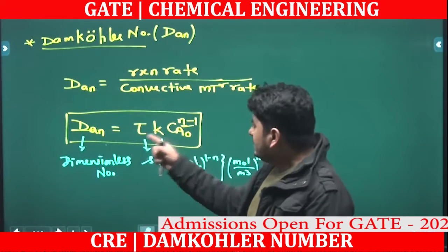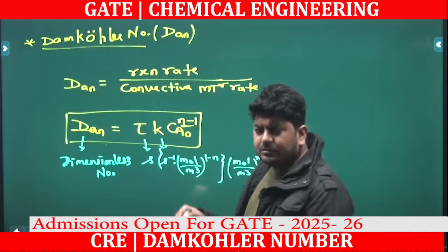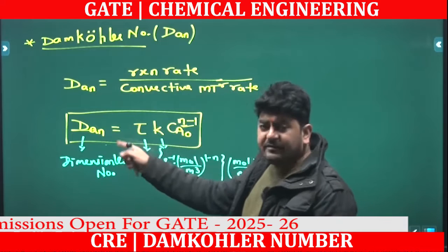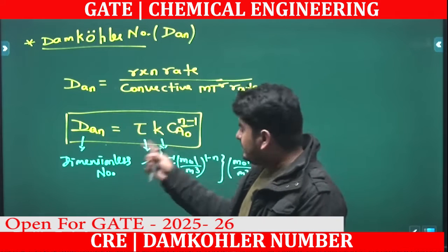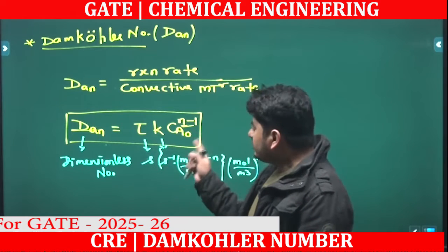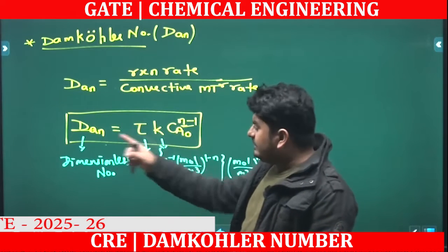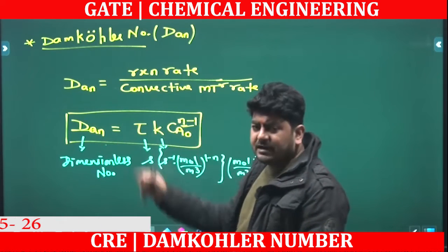For n equal to 0, the Damköhler number is tau divided by Ca0 — that is the zeroth order Damköhler number. For n equal to 1, the first order Damköhler number is simply tau. For n equal to 2, the second order Damköhler number is tau times Ca0.